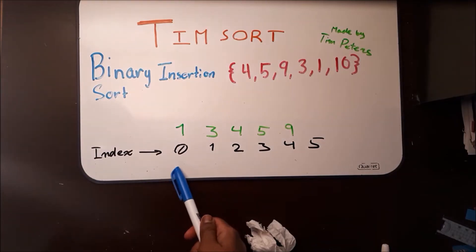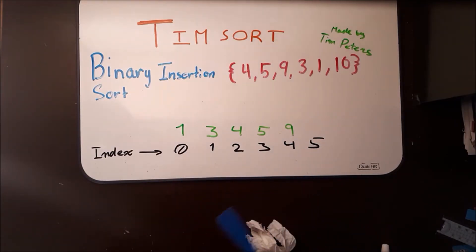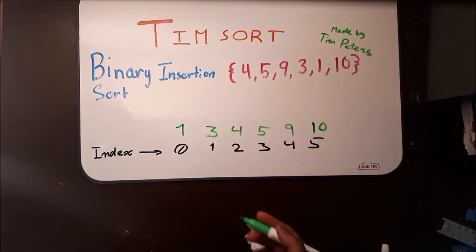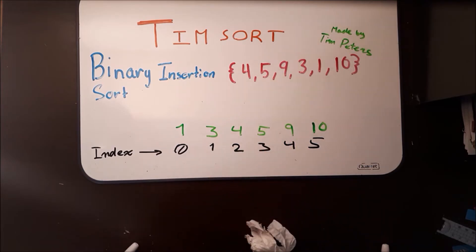Now we put 1 in its right place, and we can move on to our last element, which is 10. And lucky for us, it belongs to the right side of 9. And now we have successfully sorted this array using binary insertion sort.